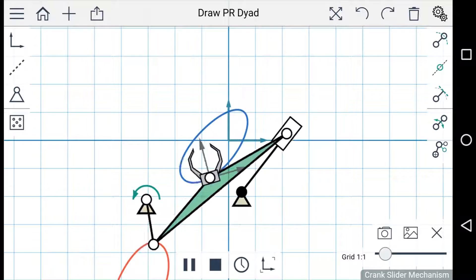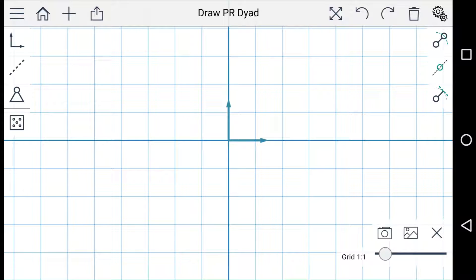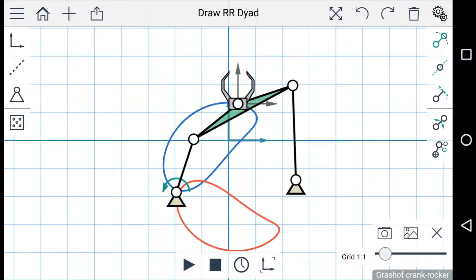I'm going to create another 4R linkage here. And you'll notice that once the linkage is generated, two more buttons appear at the bottom of the simulation menu. This first button allows you to switch the driving link, and the second button allows you to change the configuration of the linkage.